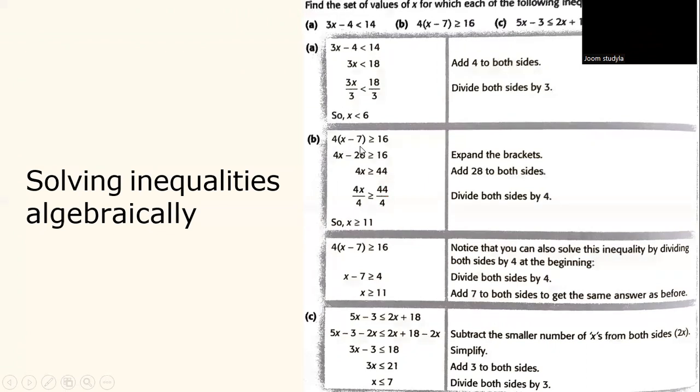4 open bracket x minus 7 is greater than or equal to 16. You have to expand the bracket. It means that 4 times x equals to 4x, 4 times minus 7 equals to minus 28, greater than 16. You have to add 28 to both sides plus 28 and 16 plus 28. You have 4x greater than or equal to 44. And then you have to divide both sides by 4. That means 4x divided by 4 greater than 44 divided by 4. You get the value of x is greater than 11.